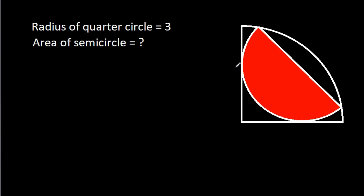In this video, we have been given that a semicircle is inside a quarter circle, and the radius of the quarter circle is 3. We have to find the area of the semicircle.